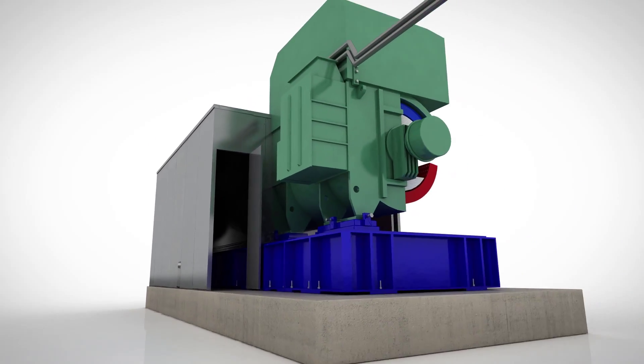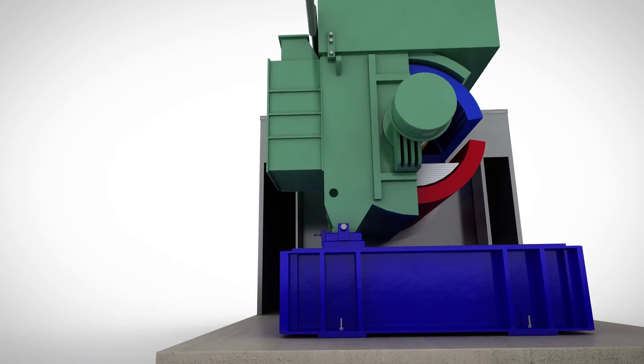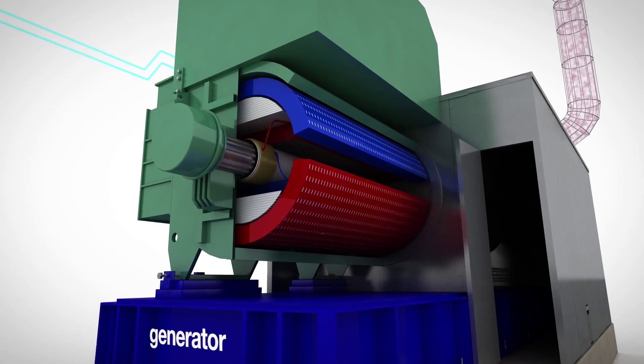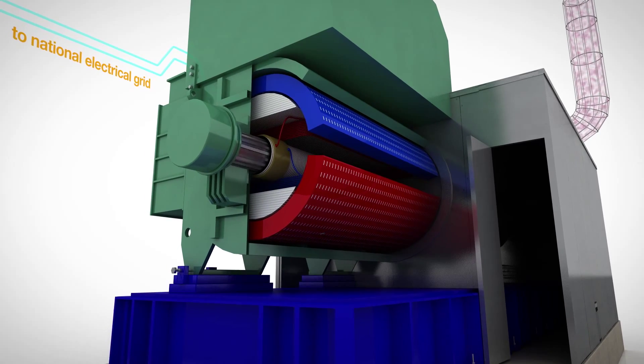The spinning turbine is attached to a generator through a gearbox. As the generator's dynamo spins, it creates electricity, which is sent through wires to the National Electrical Grid.